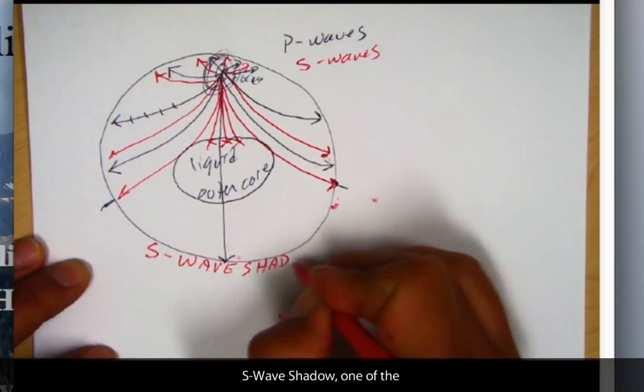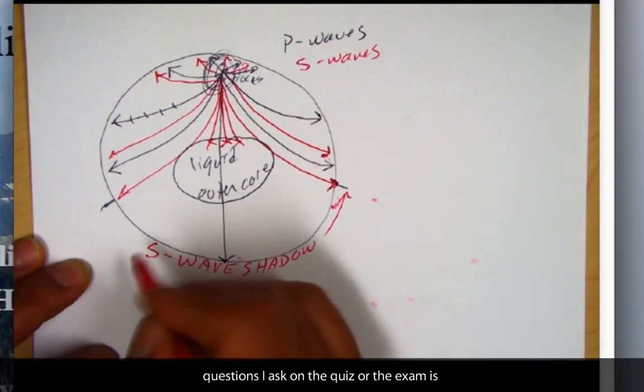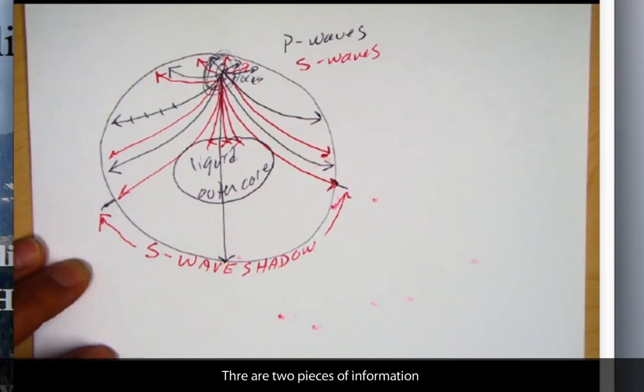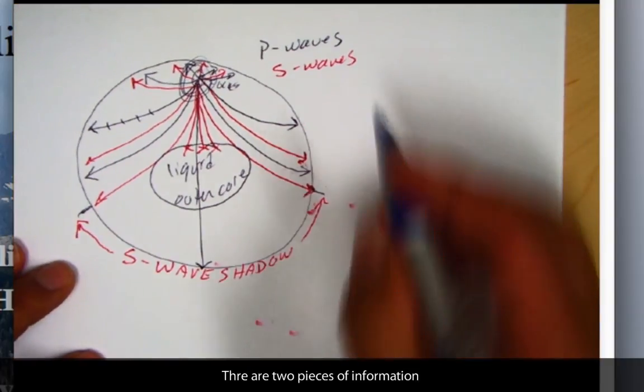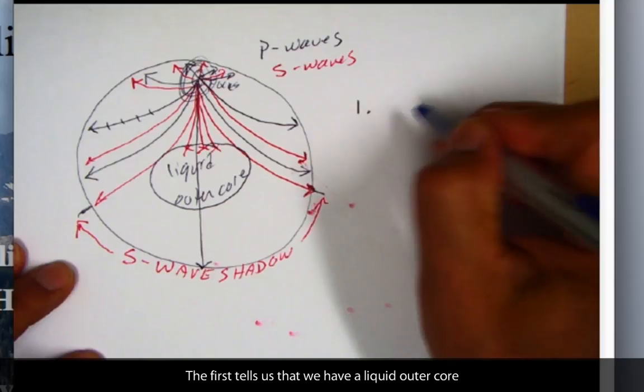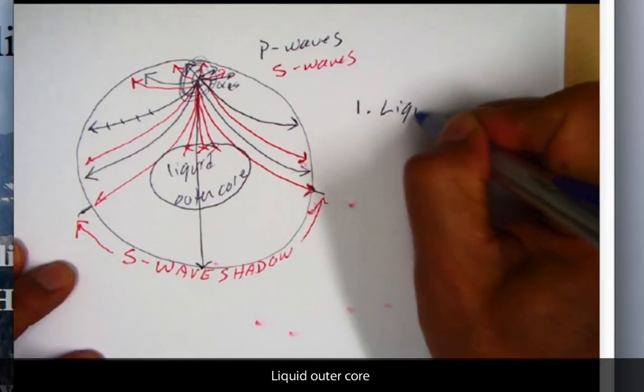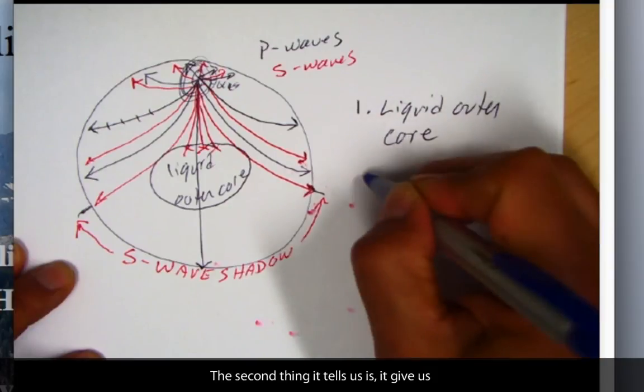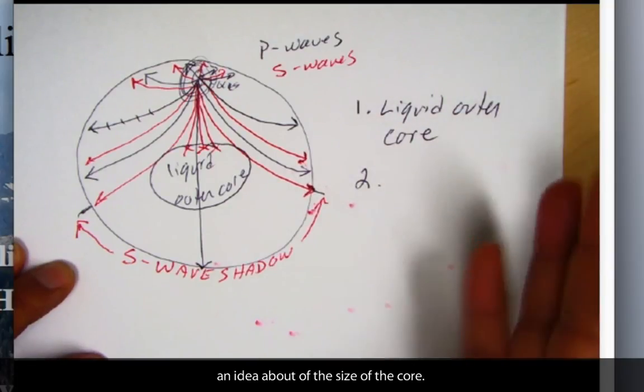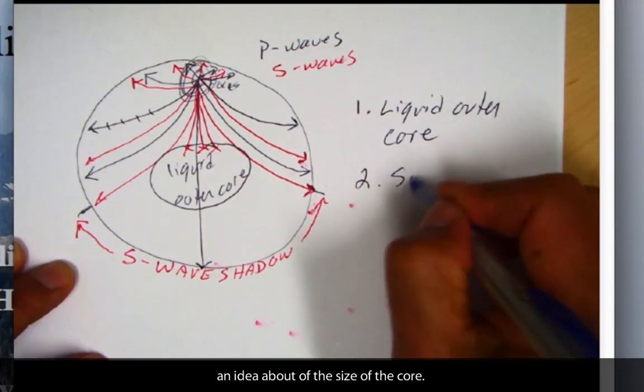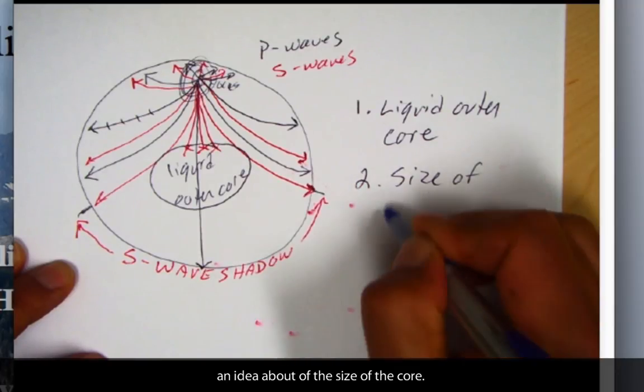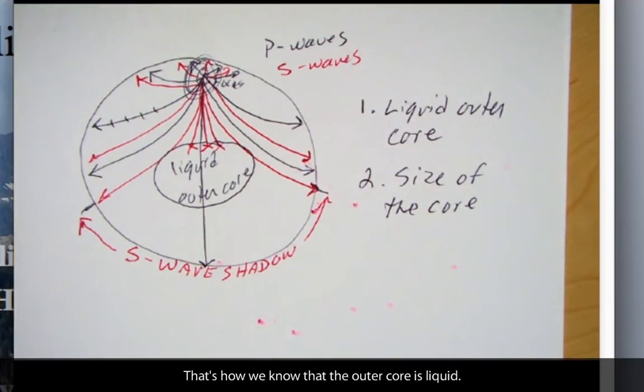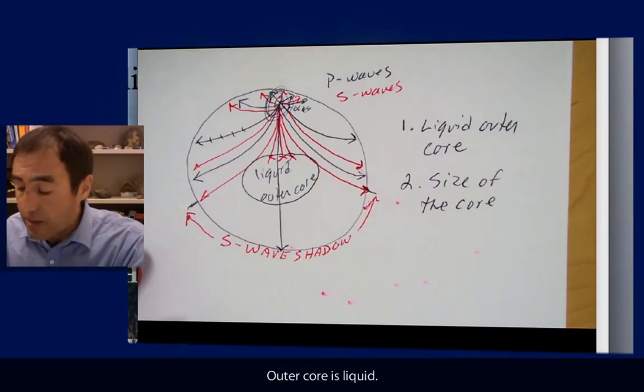In fact, there's a zone out here that we call the S wave shadow zone. One of the questions I ask on the quiz or the exam is what does the S wave shadow tell us? And there's two pieces of information. The first thing it tells us, it tells us that we have a liquid outer core. The second thing it tells us is it gives us an idea of the size of the core. That's how we know the outer core is liquid.